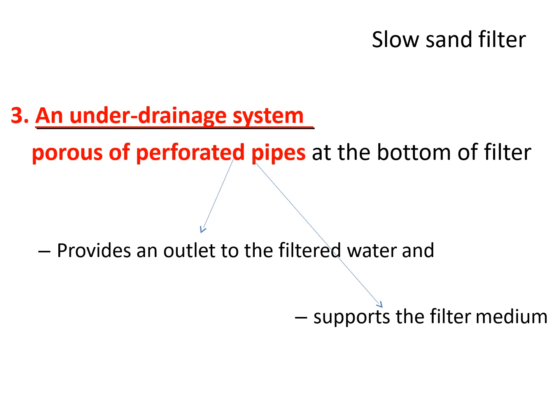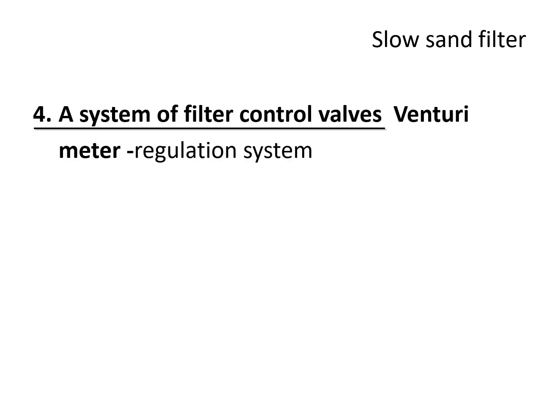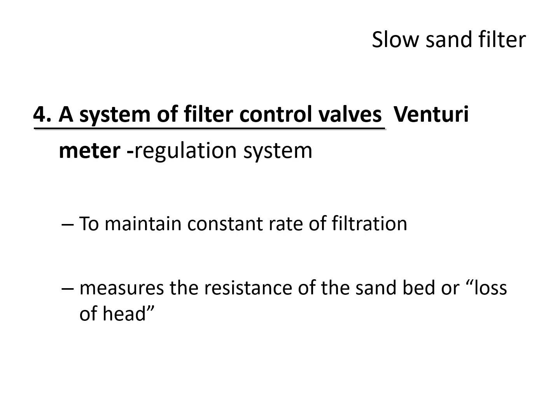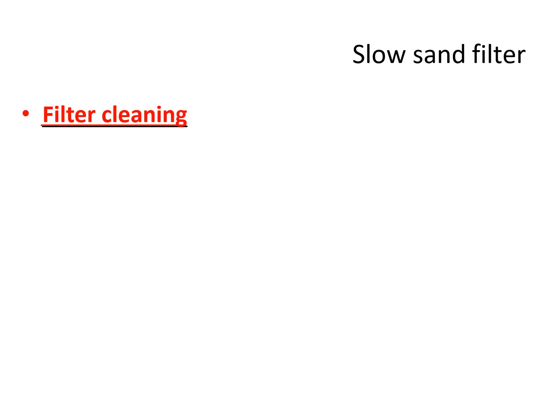The under-drainage system has perforated or porous pipes at the bottom of the filter, which provide an outlet for filtered water and also support the filter medium. There is a system of filter control valves called a venturimeter, which is the regulation system. This maintains a constant rate of filtration and also measures the resistance of the sand bed, known as loss of head. Loss of head occurs when the sand bed resists the downward flow of water, requiring re-adjustment of the filtration system.